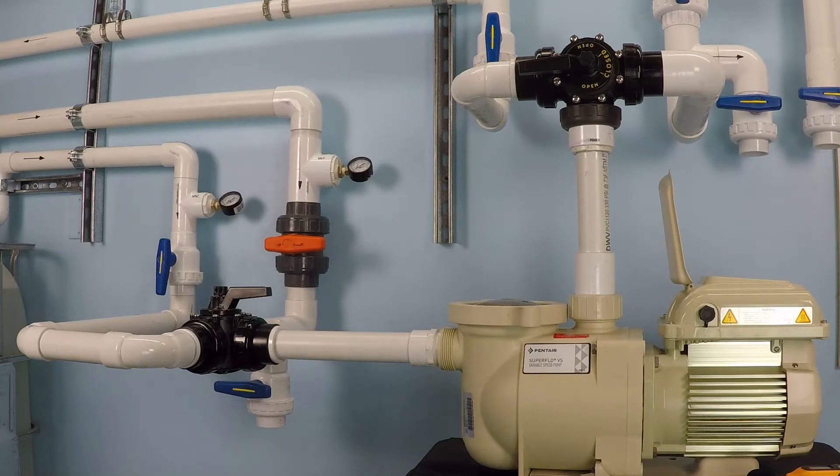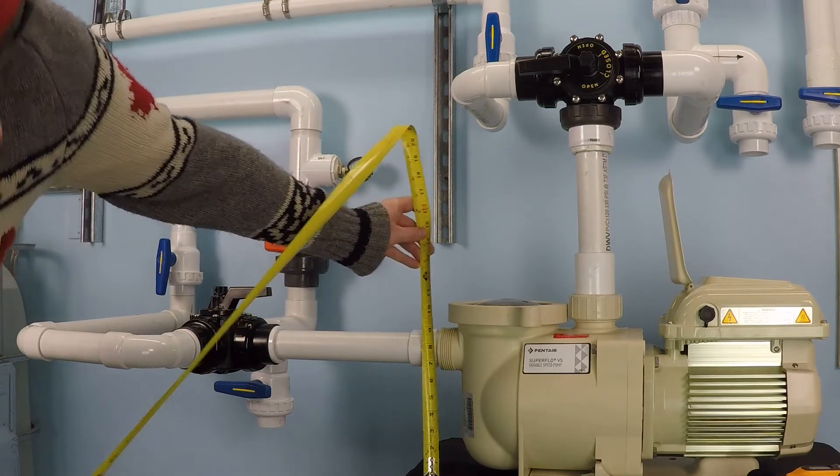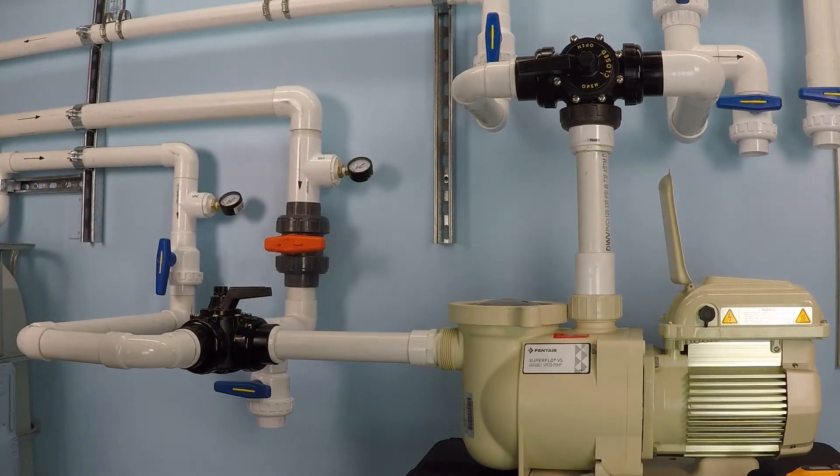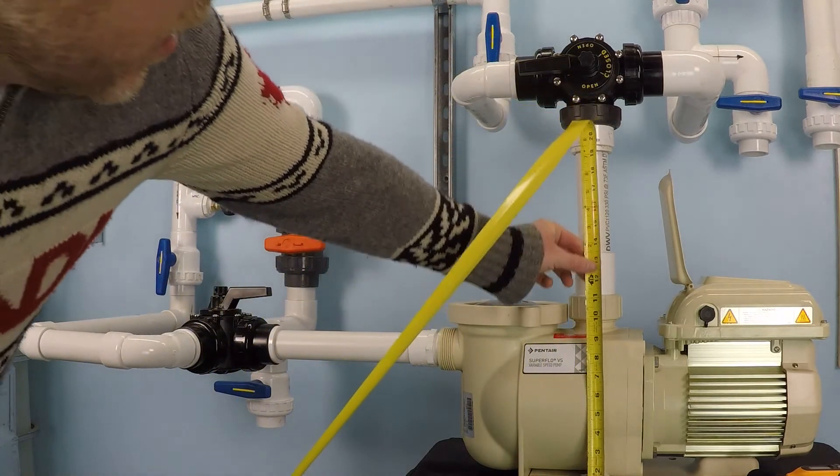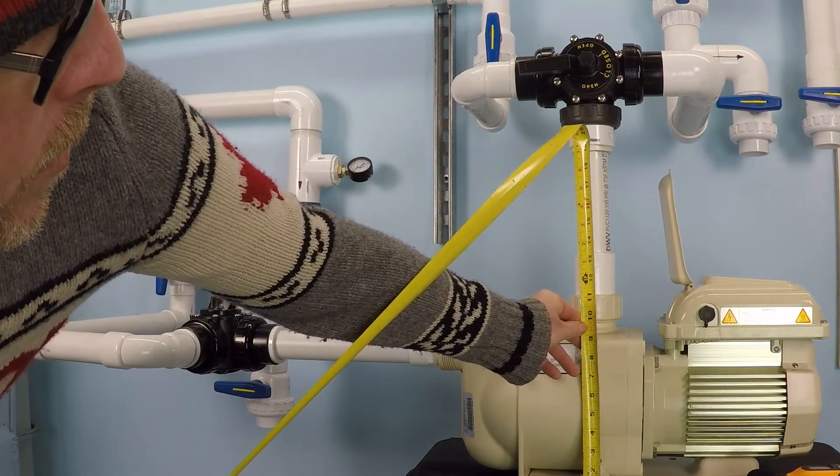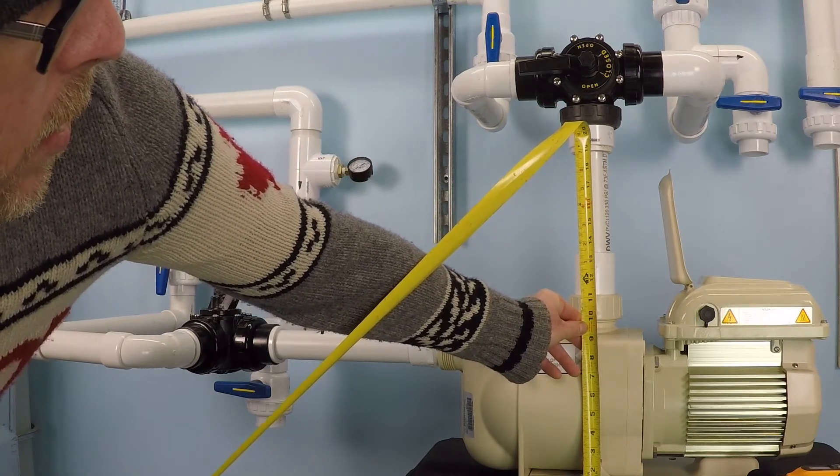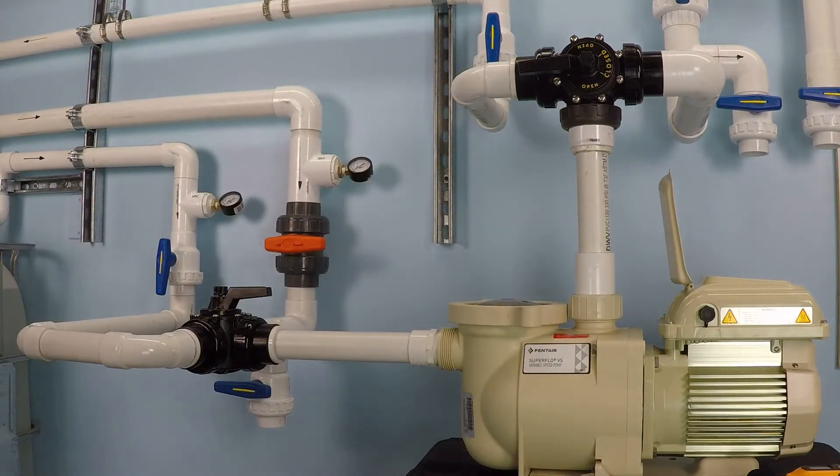If you utilize the Pentair union that it comes with, it's right around six and a half inches. So that's the suction side height. Let's look at the discharge side height. Let's see, around thirteen, twelve and three quarters.